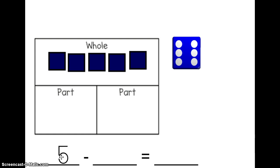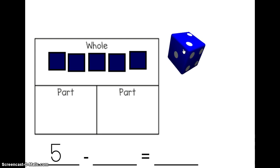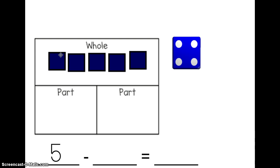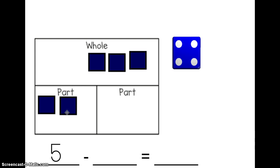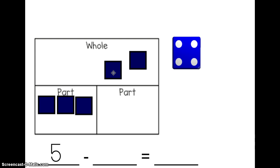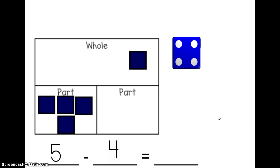I'm going to start with five in my number sentence. Five minus what? Let's roll a dice to see what one of my parts will be. One of my parts is going to be four. So I'm going to take apart my whole and slide four cubes — one, two, three, four — into one of my parts. Subtraction means taking apart. So I took apart my whole and put some in one part, and that was four.